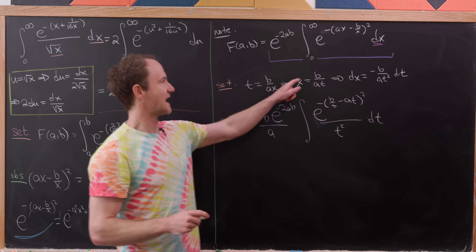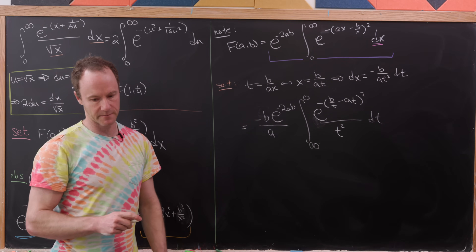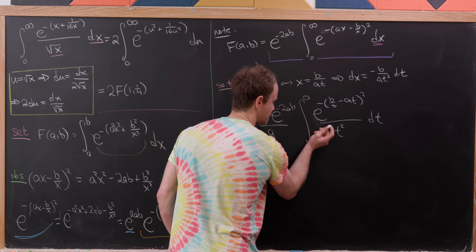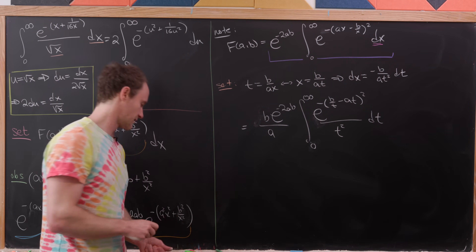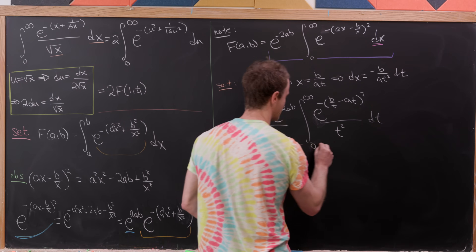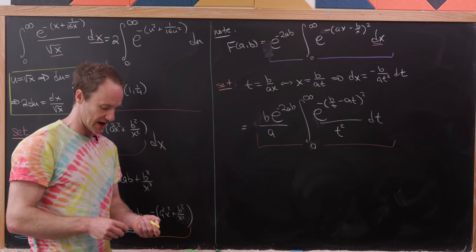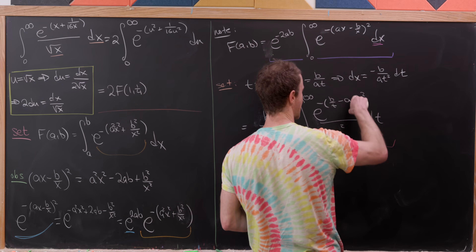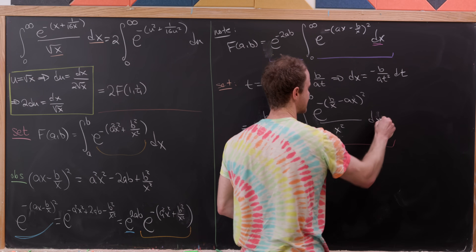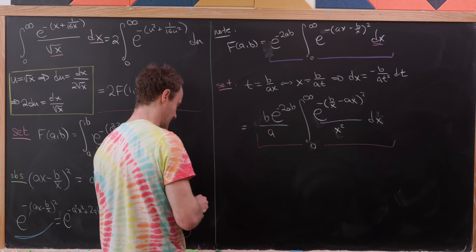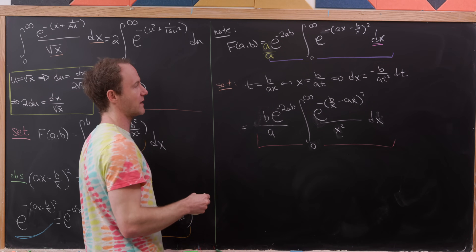As x approaches 0 from above, t approaches infinity, and as x approaches infinity, t approaches 0. Taking the minus sign out front to swap the bounds restores the order from 0 to infinity. Renaming t back to x (it's just a dummy variable) and multiplying by a over a to get a common denominator of a, we're ready to add the two forms of f(a, b) together.